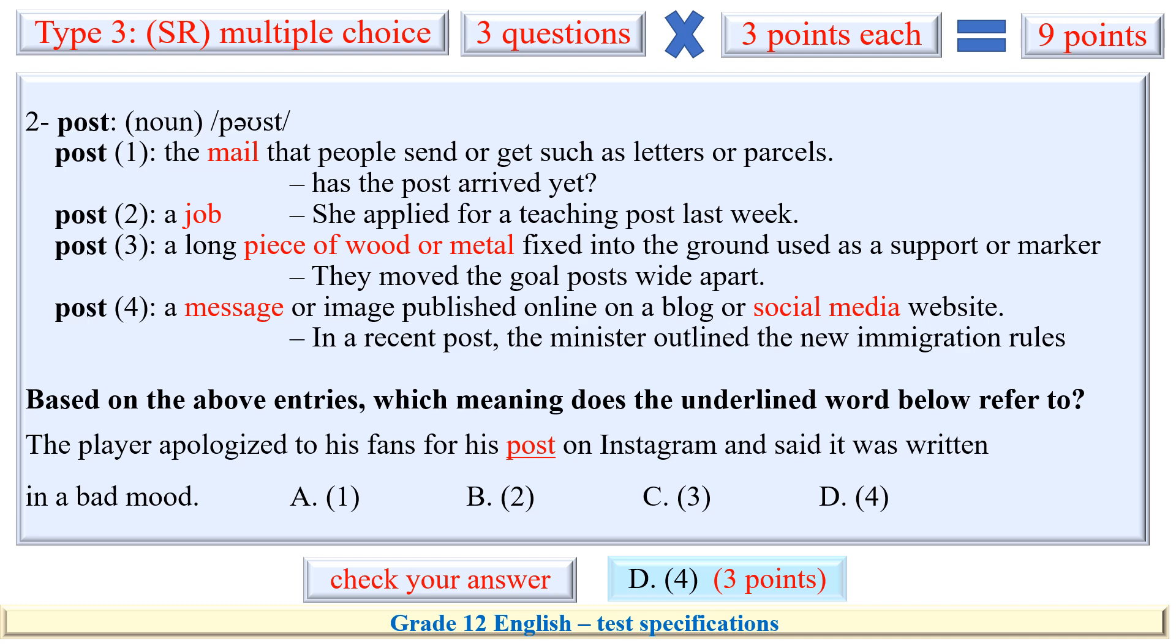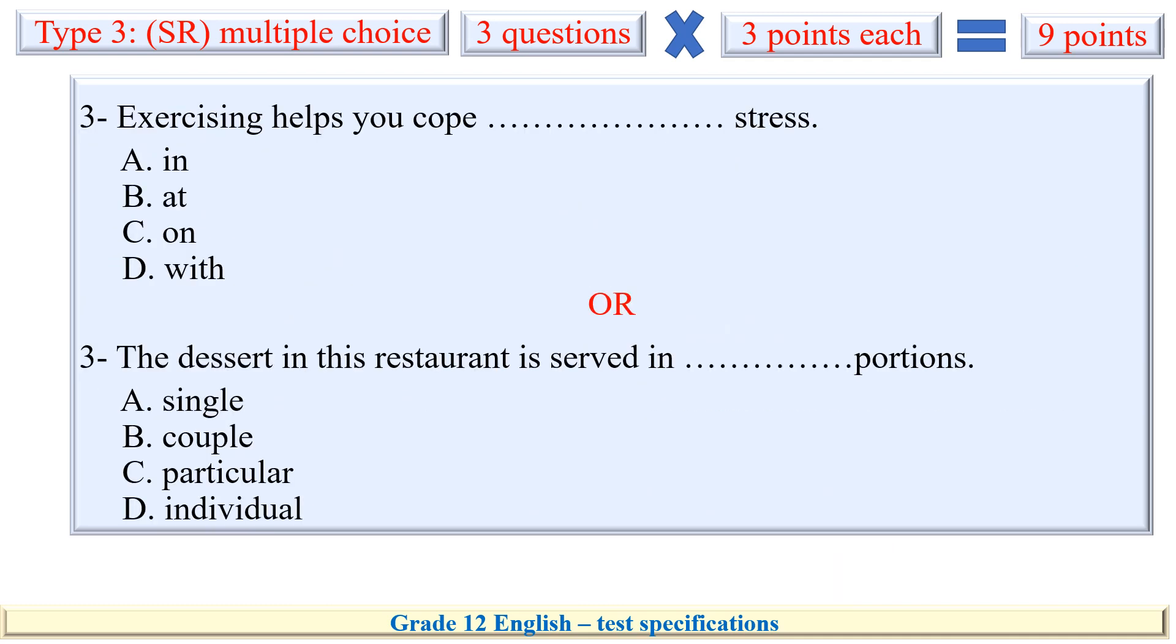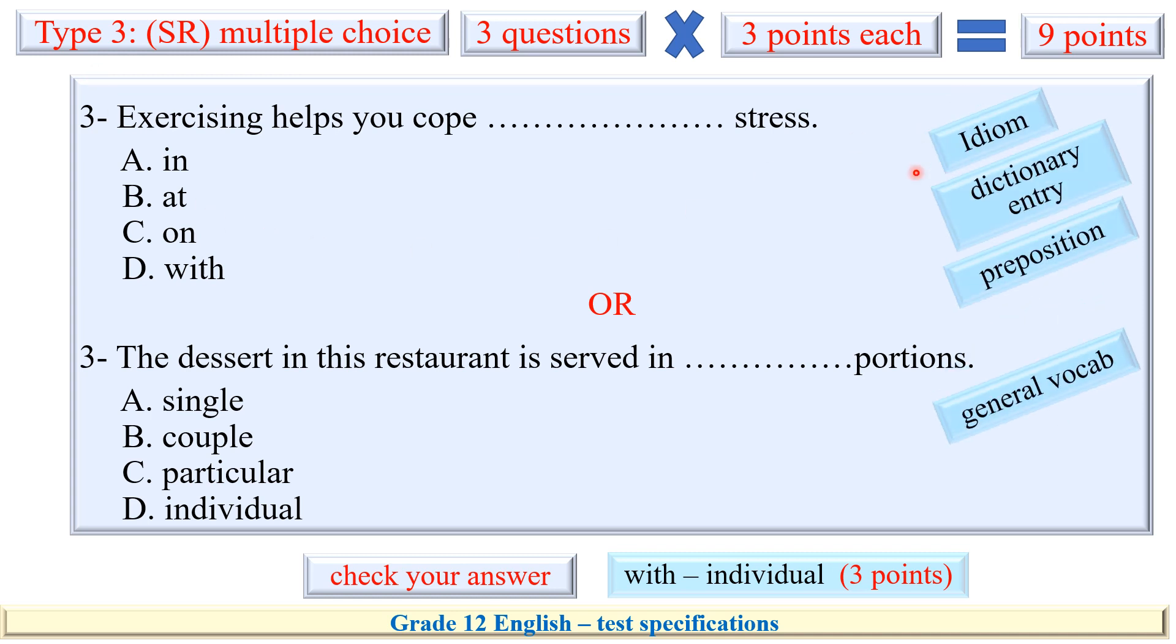Three points for this question. Let's continue. Another type of MCQ or SR multiple choice questions can be about a preposition or just a general word. Take your time to think. Here you are the feedback. So the third and the last type of vocabulary can be either an idiom, dictionary entry, preposition, phrasal verbs, or just a general vocab.